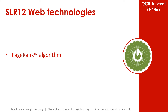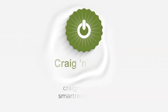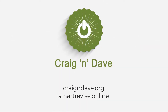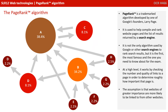In this video, we introduce the PageRank algorithm. PageRank is a trademarked algorithm developed by one of Google's founders, Larry Page. It's used to help compile and rank website pages and list of results returned by a search engine. It's not the only algorithm used by Google or other search engines to rank search results, but it is the first, one of the most famous, and also the one you need to know about for your exam. At a high level, it works by checking the number and the quality of links to a page in order to determine roughly how important that page is. The underlying assumption is that websites of greater importance are more likely to be linked to from other websites.